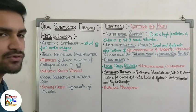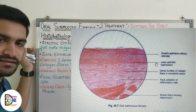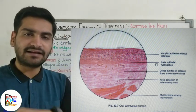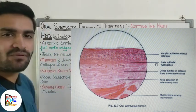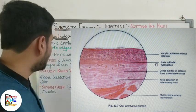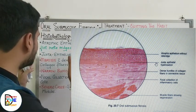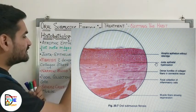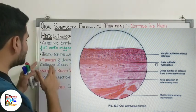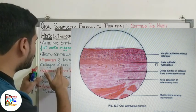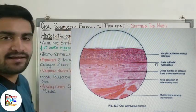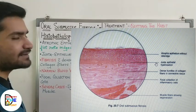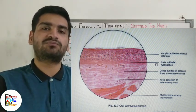Starting with the histological features of oral submucous fibrosis: firstly, the epithelium will be atrophic — as mentioned in the definition, the epithelium is flat or short without prominent rete ridges. Next, just below the basement membrane, adjacent to the epithelium, you will see a layer of hyalinization — this is called juxta-epithelial hyalinization. The third point is fibrosis with dense bundles of collagen fibers in the connective tissue, which is the main and most obvious finding.